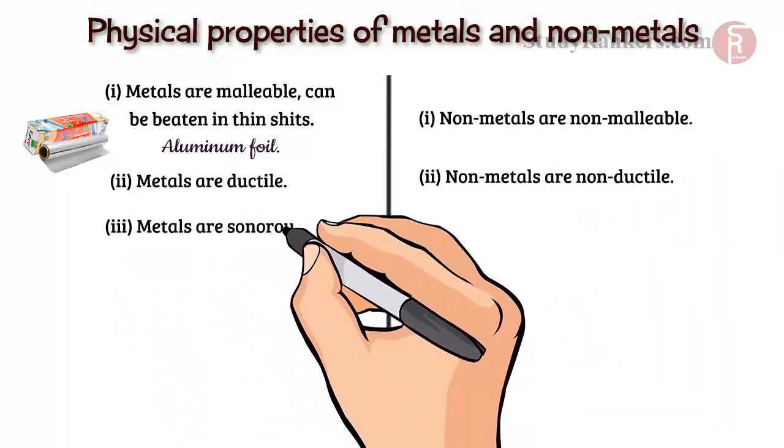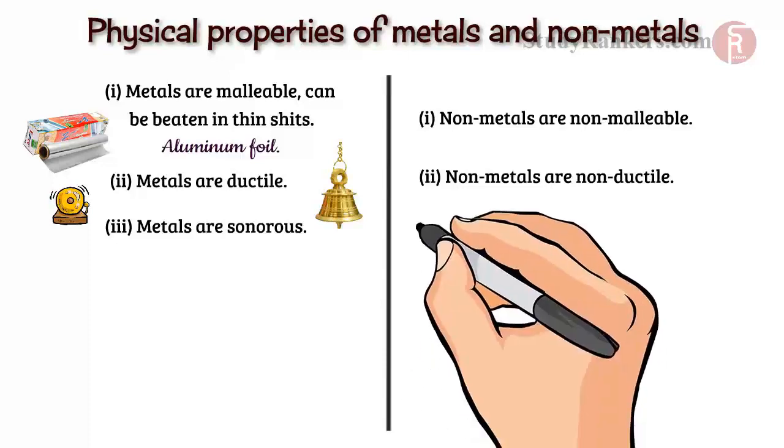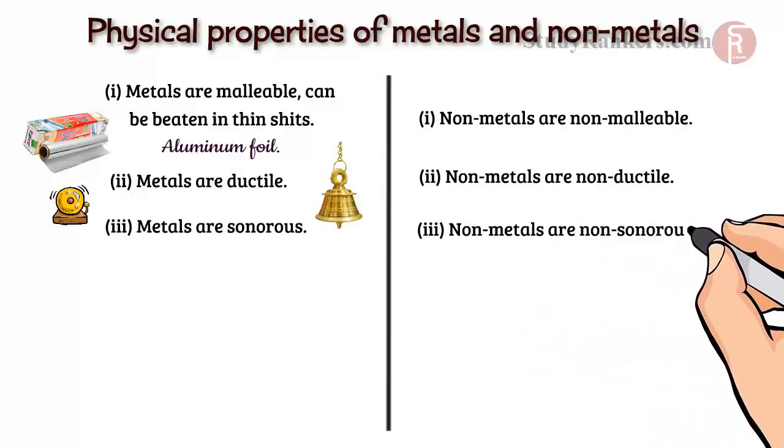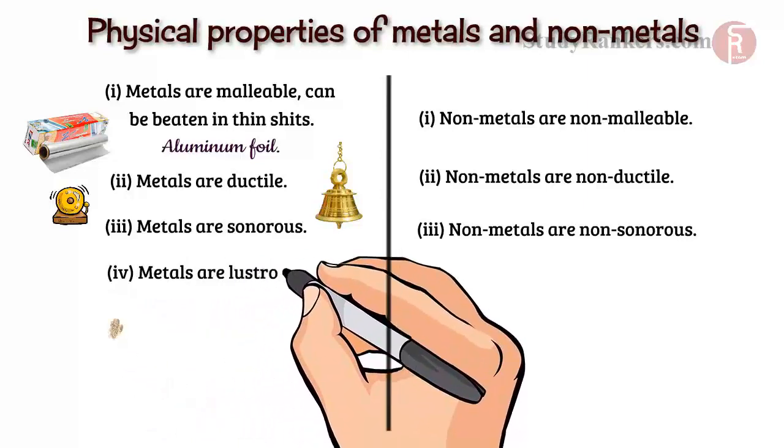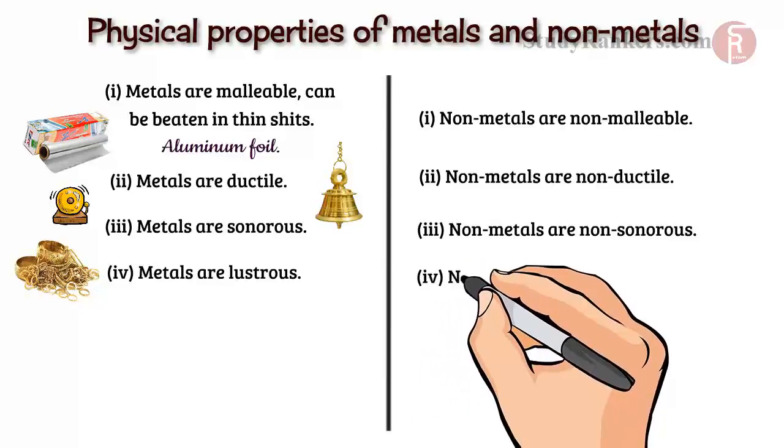Metals are sonorous. The metals have ringing sound. The school bell, the temple bell, all are made up of metals. Non-metals are non-sonorous. Metals are lustrous, that means they have shiny appearances, hence used in making jewelries.